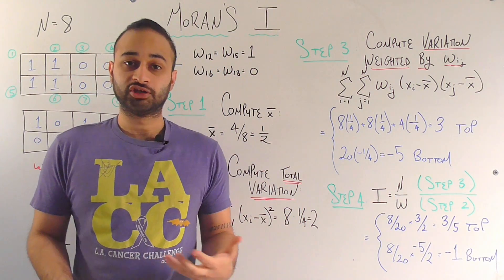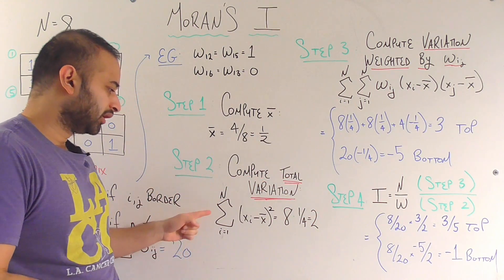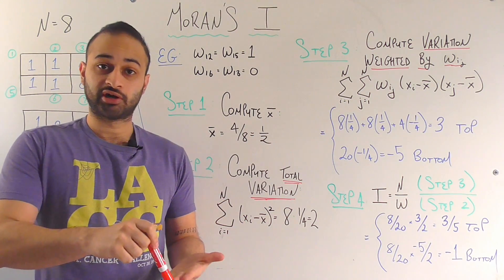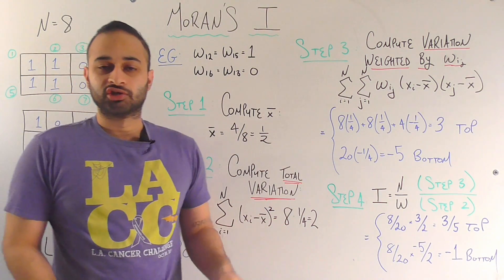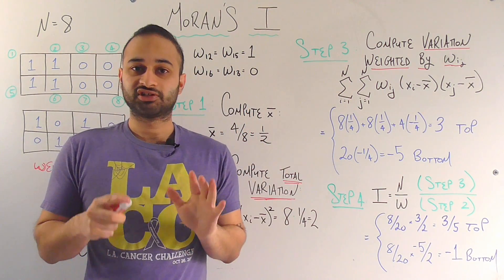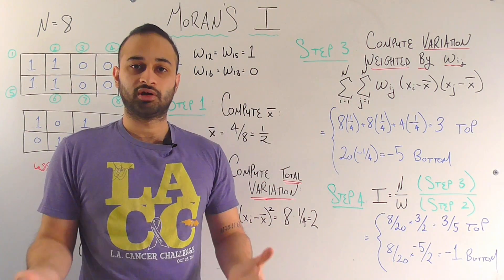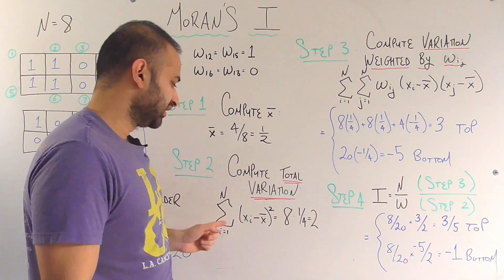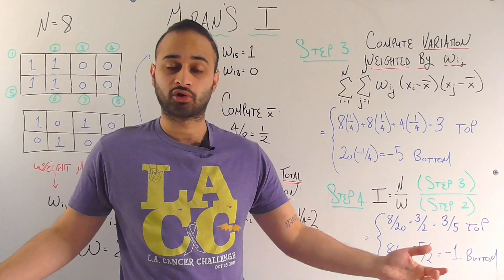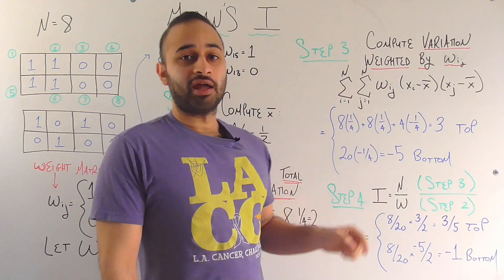Step 2 is to compute the total variation in our eight-state country based on how far each value is from the mean. Mathematically, we sum from 1 to n: (X_i minus X-bar) squared. This is the sum of squared differences between each state's value and the mean. Notice this doesn't yet account for the weights between states or which states border each other — it's simply the total variation in the geography. Doing this calculation gives us 2.